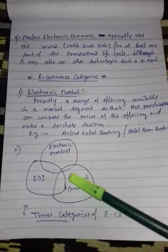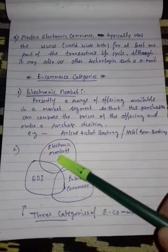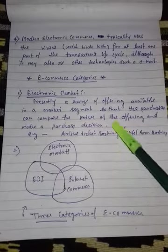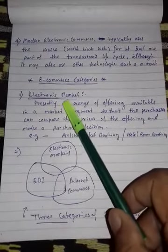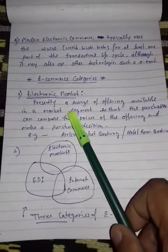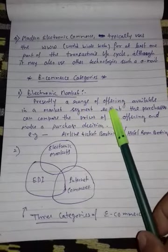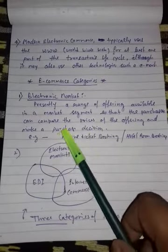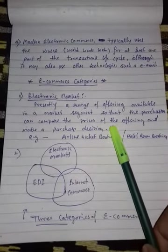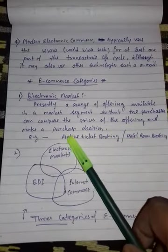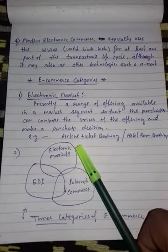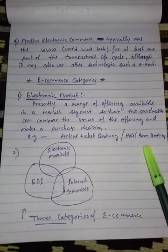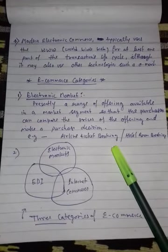There are three categories of e-commerce: electronic market, EDI, and internet commerce — these three things are interrelated with each other. Electronic market is basically a range of offerings available in a market segment so that the purchaser can compare the prices of offerings and make a purchase decision, like booking airline tickets, hotel rooms, and other services.